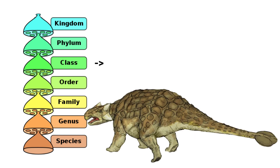Next, we have the class level. Classes are smaller groups within a phylum that share more specific characteristics. In the case of the Ankylosaurus, it belongs to the class Reptilia, which includes animals like lizards, turtles, and all dinosaurs.